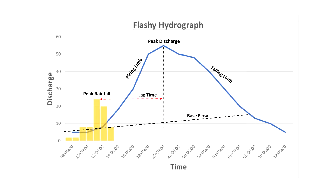A hydrograph shows the amount of discharge into a river following precipitation. In this example, the yellow bar chart shows the amount of rainfall over the specified hours. The peak rainfall was around about 12 o'clock.